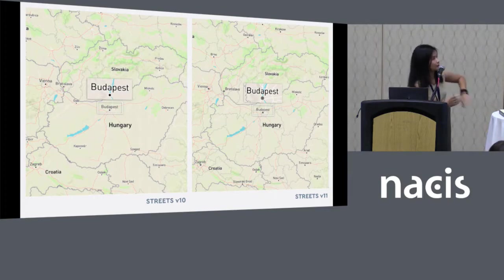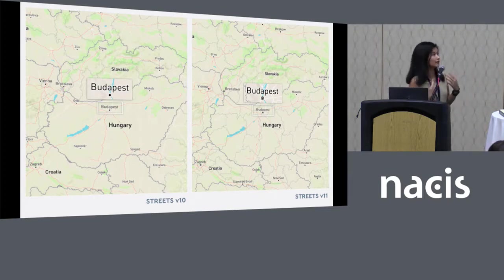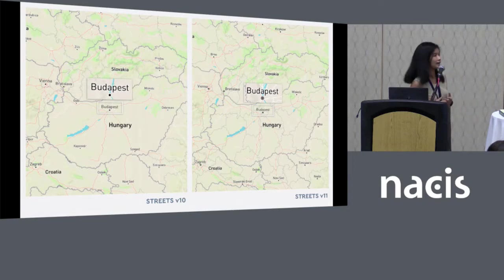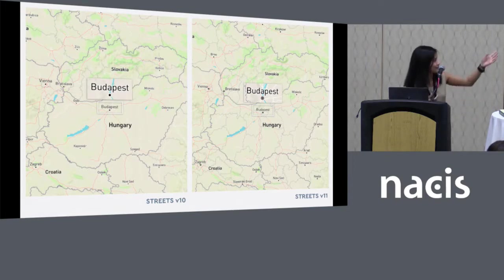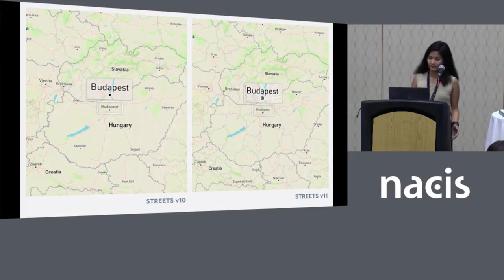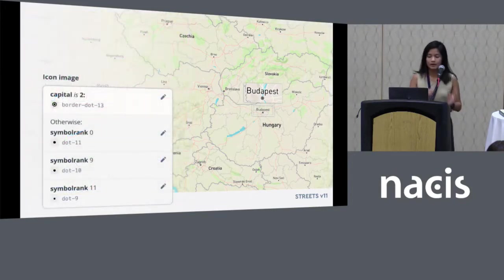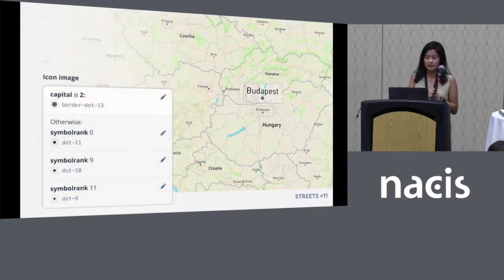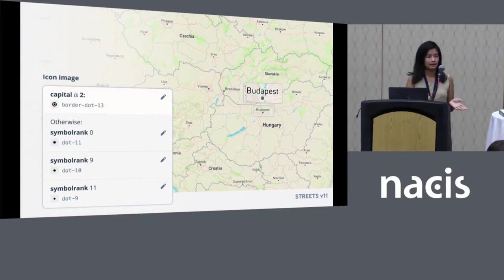If you also look around the rest of the map, you might notice that larger cities like Krakow get a slightly larger icon than nearby cities like Ostrova at the top.